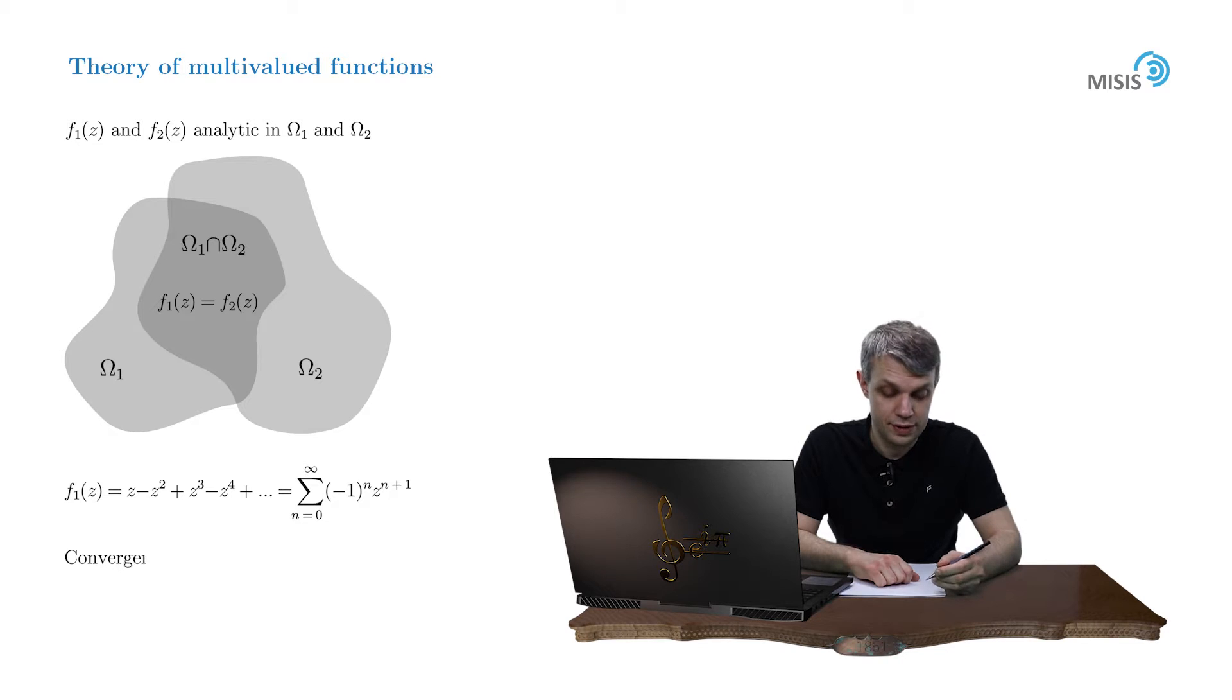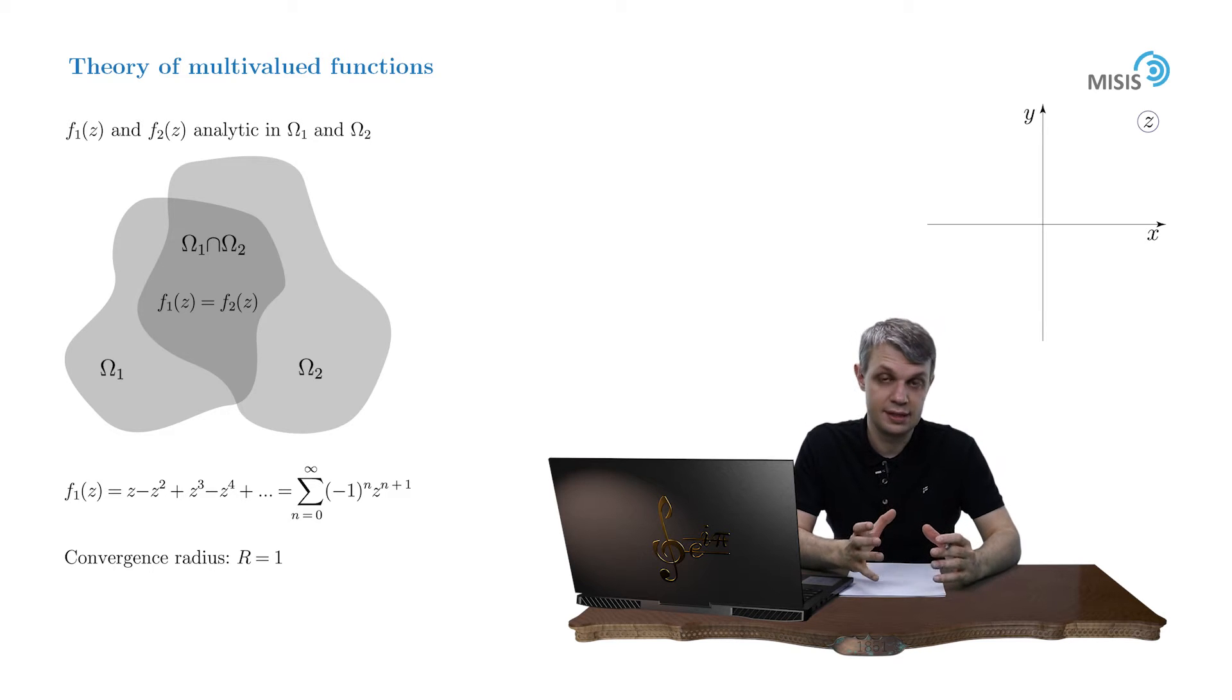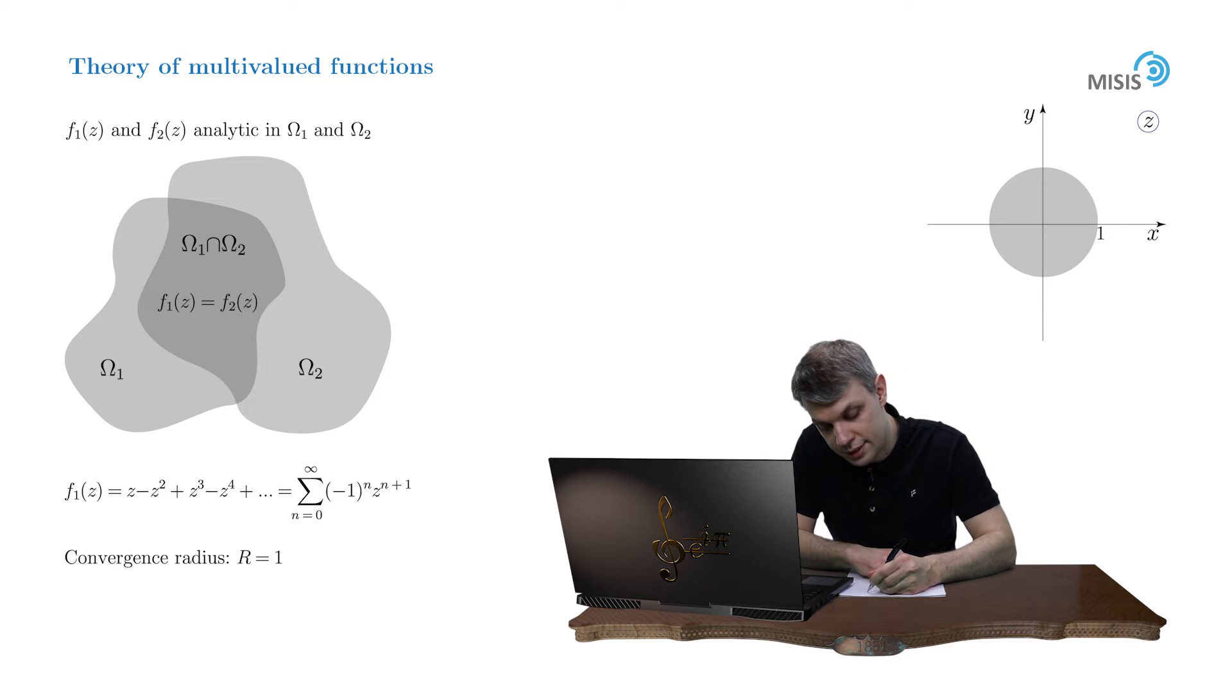The radius of convergence of this series is 1, so this series defines a function analytic inside a unit disk centered at point z equals 0. And let's denote this domain, the unit disk, as Ω₁.